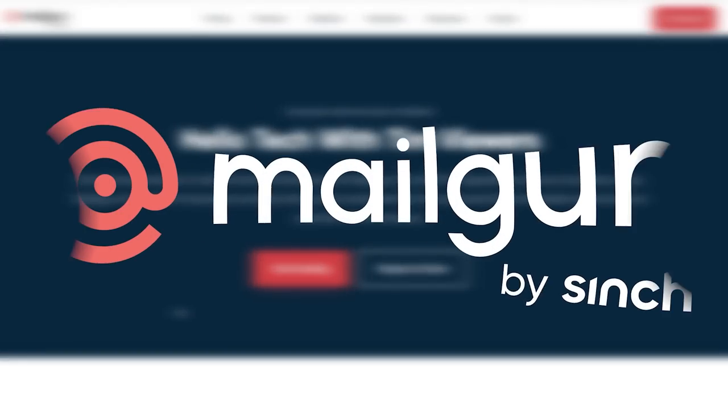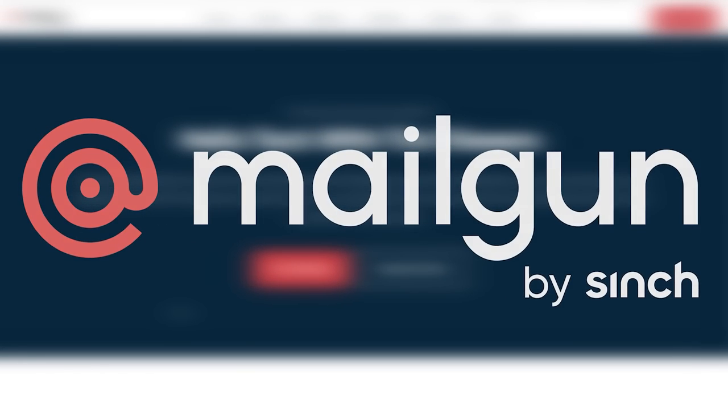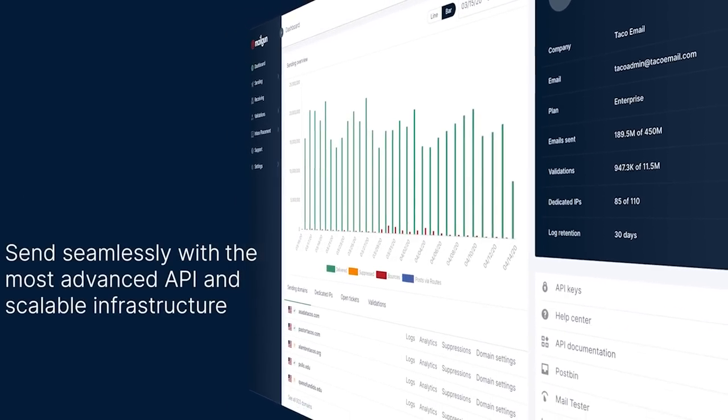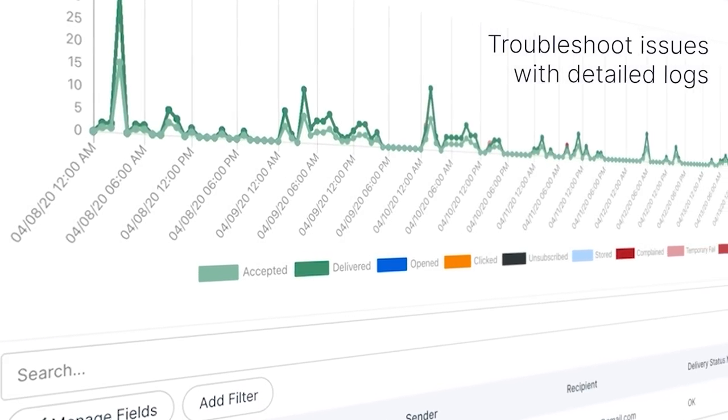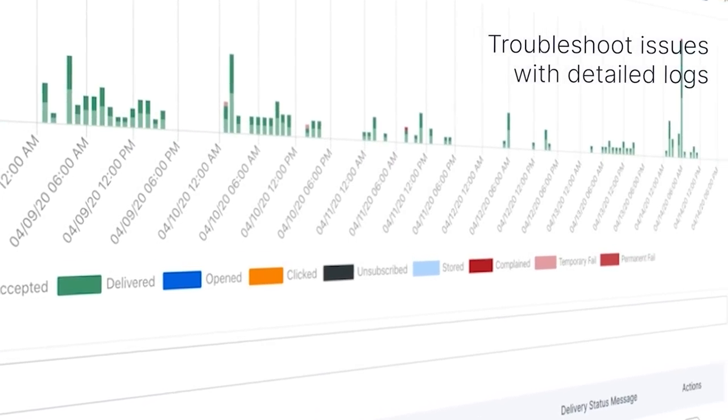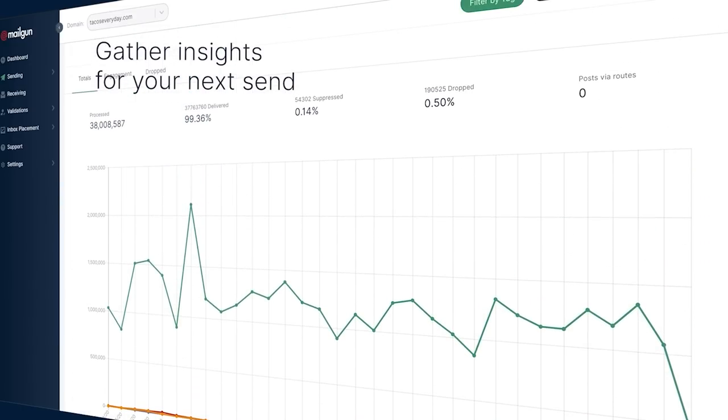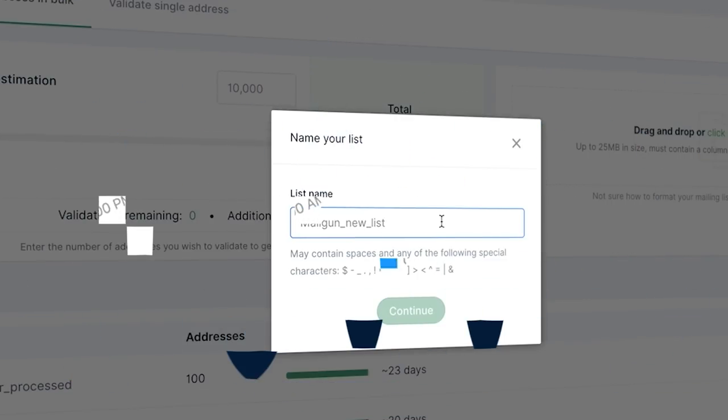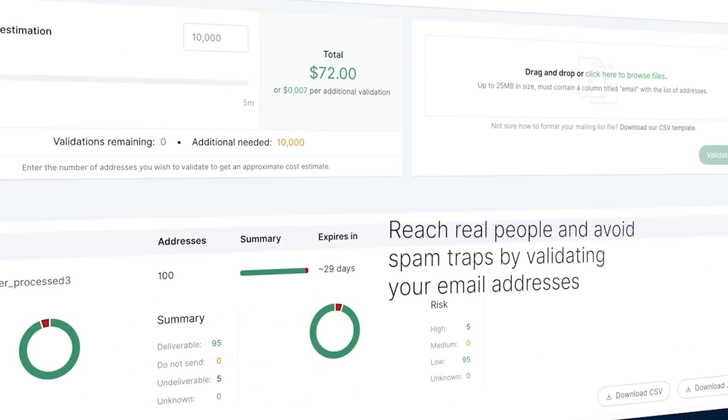Before we get started, I need to thank Mailgun for sponsoring this video. Mailgun lets you send transactional or bulk emails effortlessly, regardless of your business use case. Mailgun's ease of use, world-class support, and powerful APIs empower smart development teams to reach customers at scale. Mailgun can even prevent fake signups, remove invalid email addresses, and overall improve your email delivery and conversion rates.